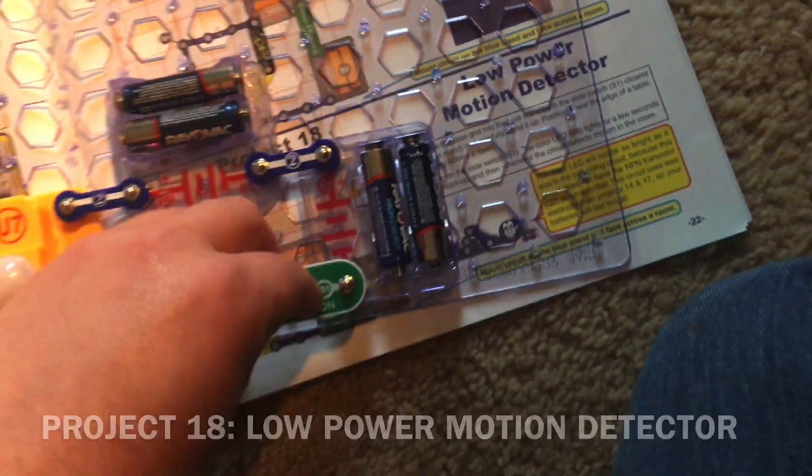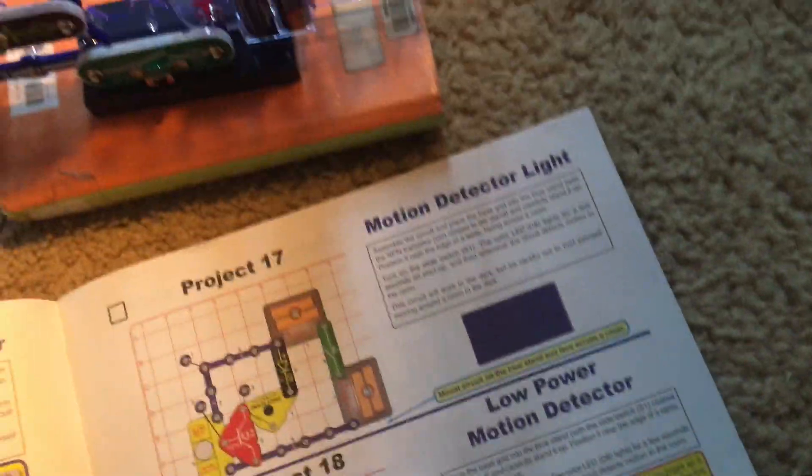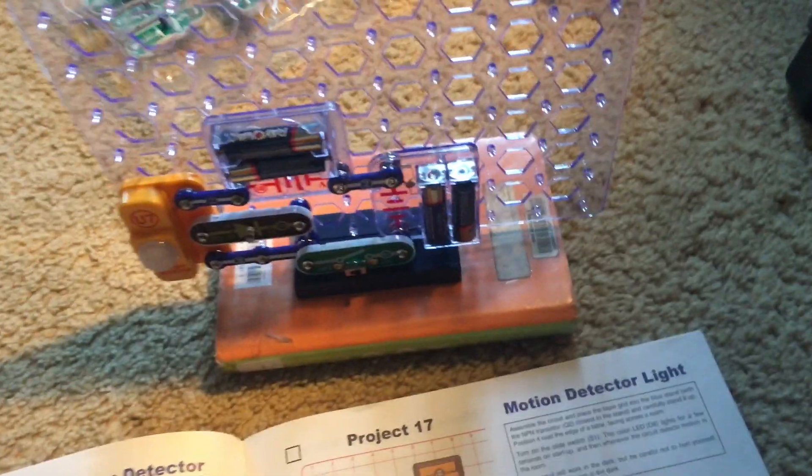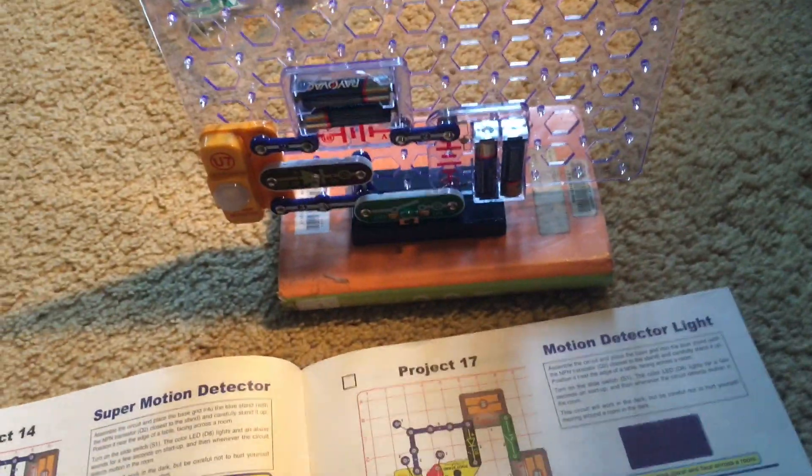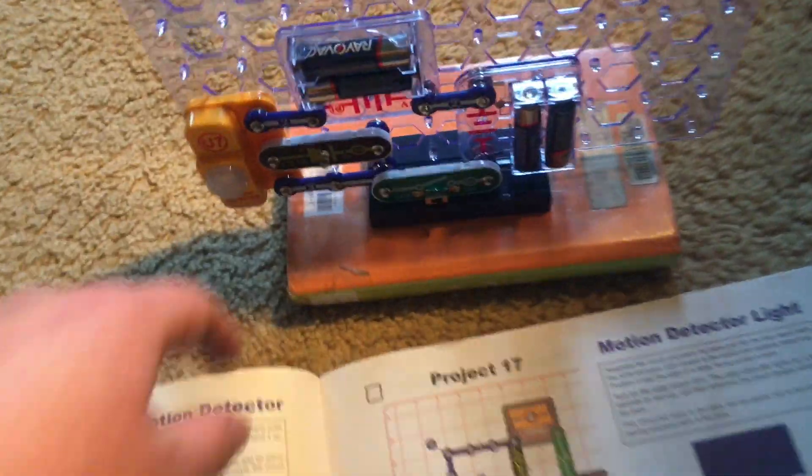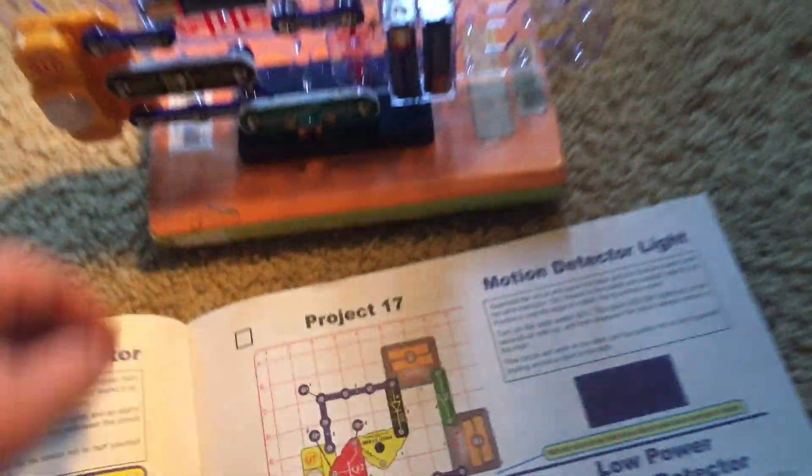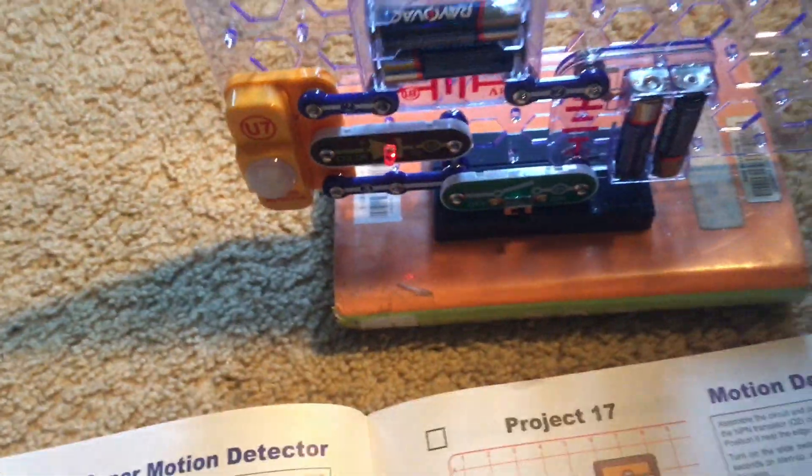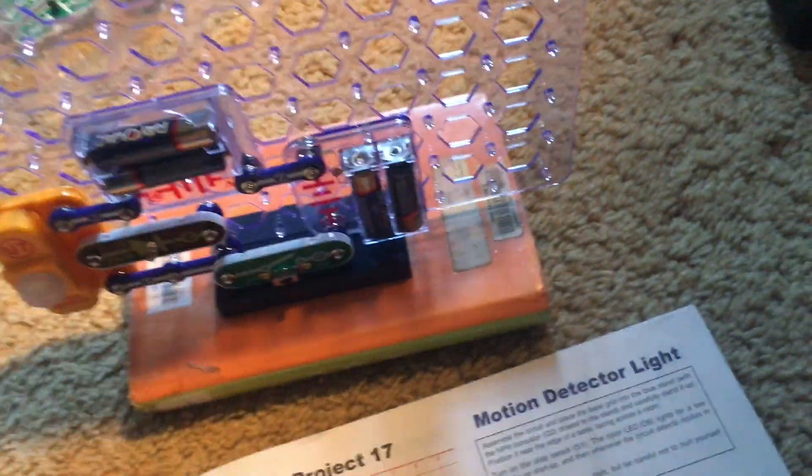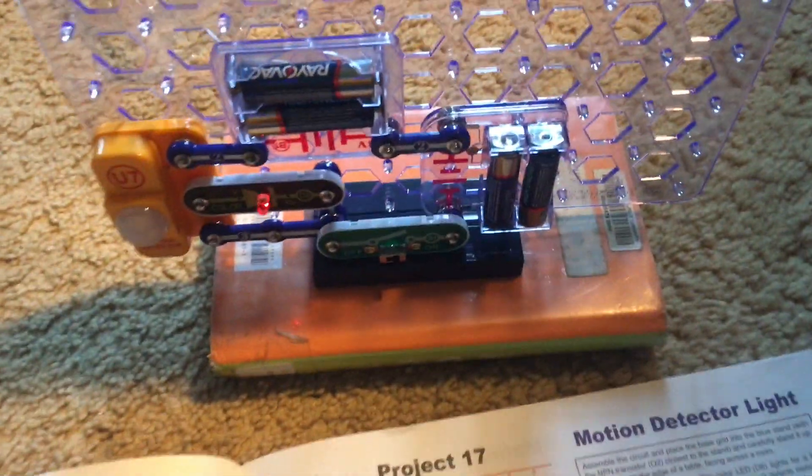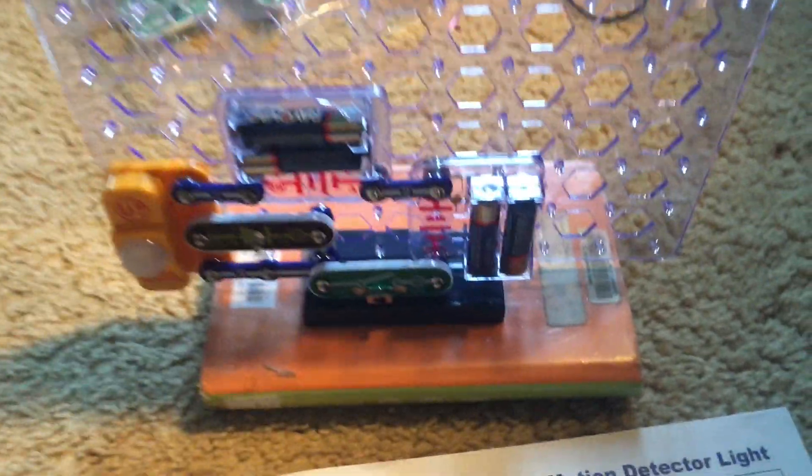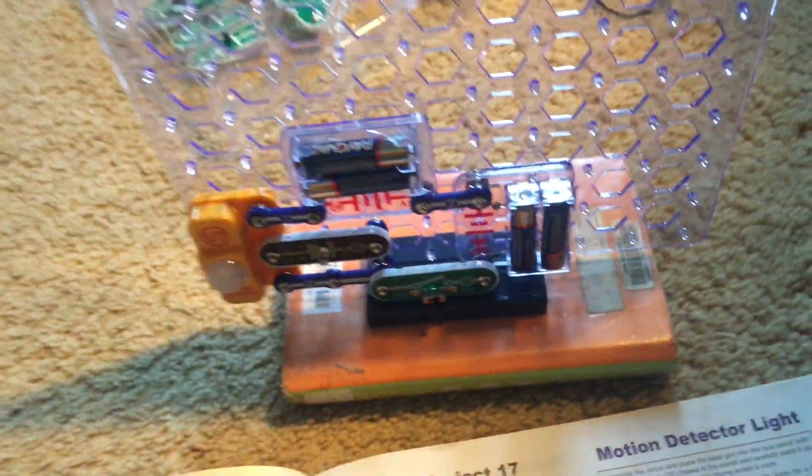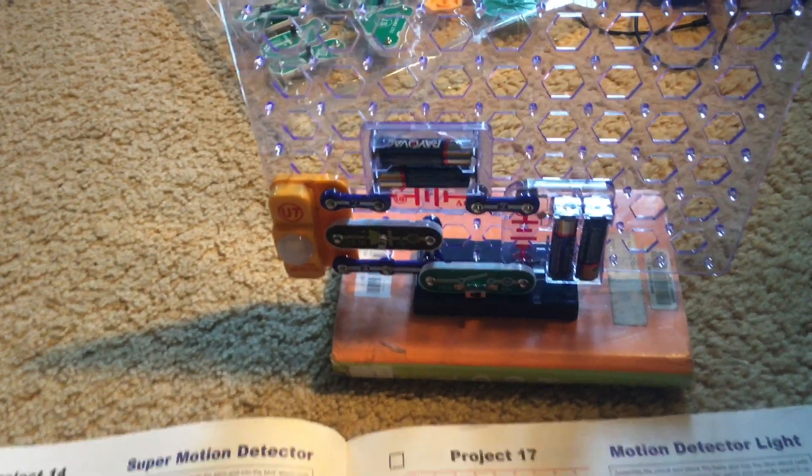I'm going to turn on the slide switch and place the circuit on the blue stand. Once again, you should have it face across the room, but I'm just going to have it face me for demonstration purposes. This time when your body heat activates the motion detector and the color LED comes on, it will not be as bright. Because even though I have both battery holders, the NPN transistor, which amplifies the current, is not included in the circuit. However, the benefit of a circuit like this is that the batteries will last longer since less energy is being drawn from them.